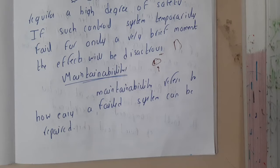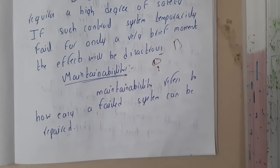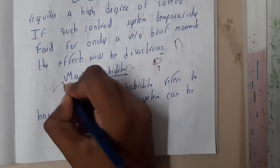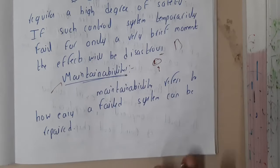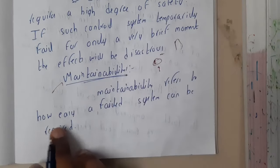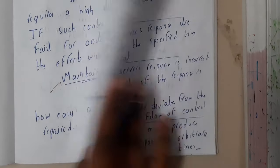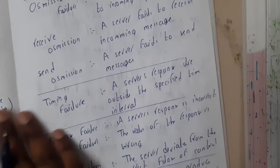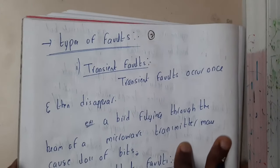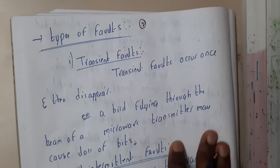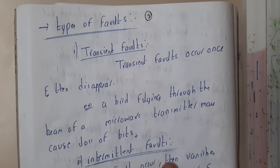Finally, maintenance refers to how easily a failed system can be repaired. For example, websites take scheduled maintenance to check their status, ensure everything is working fine, and take backups. In the next lecture, we'll be discussing some types of faults. Thank you for watching.